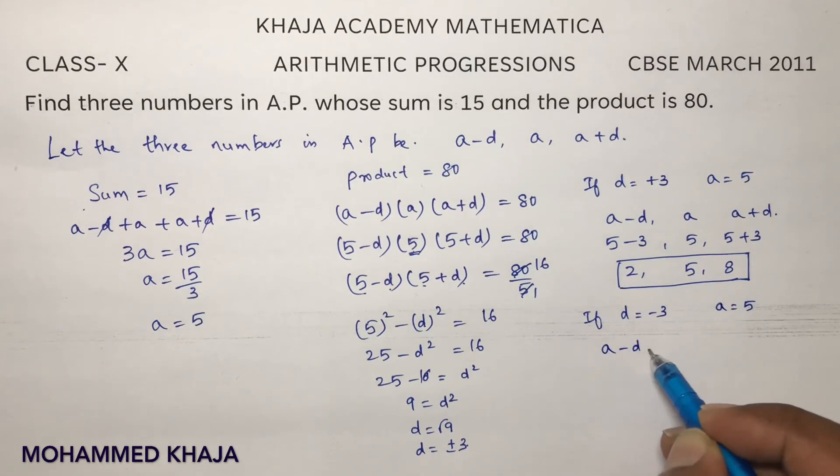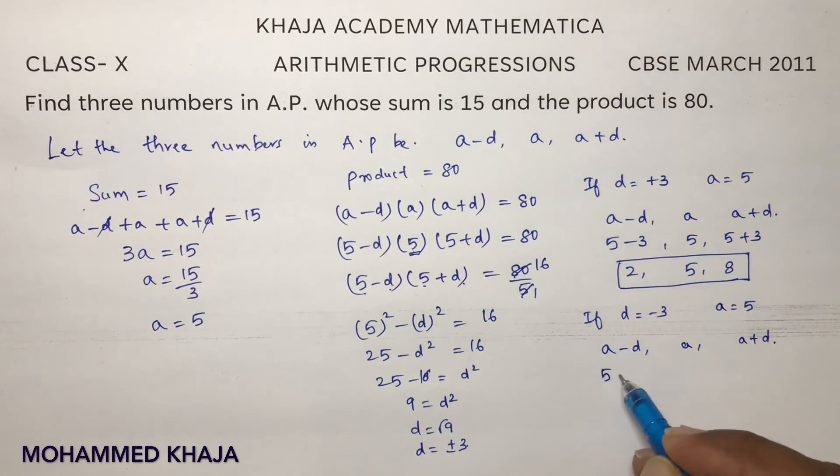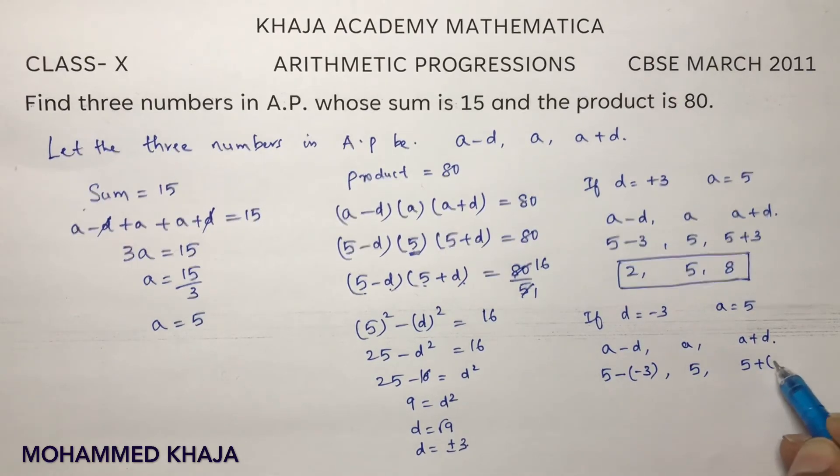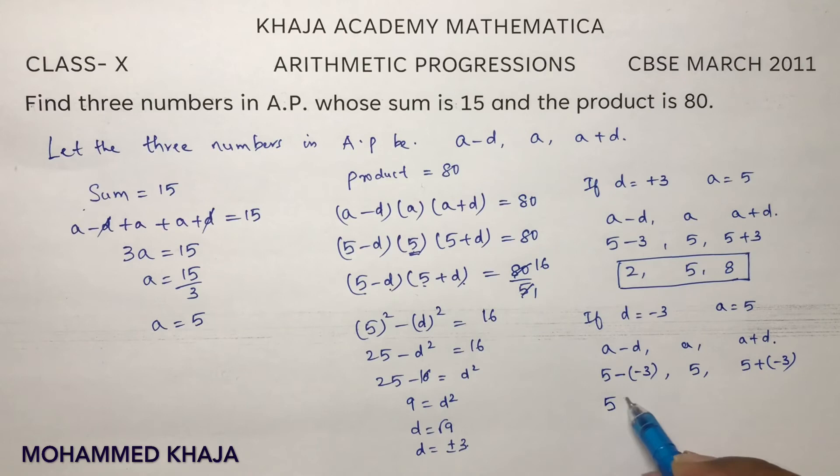Three terms A minus D, A, and A plus D: A is 5 minus D is minus 3, A value is 5, 5 plus D is minus 3, minus of minus plus 3. 5 and 5 minus 3. So 8, 5, 2.